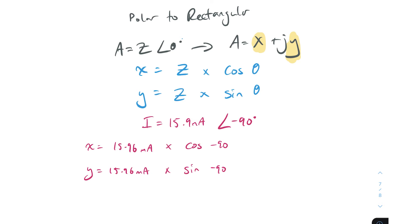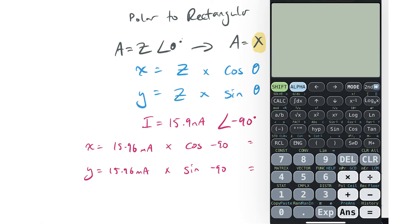If you're good with your trig you should spot something here. Let's pull up our calculator. You've got 15.96, and you don't need to convert from milliamps to amps because as long as you remember that you started off with milliamps, your final answer will be in milliamps. So 15.96 multiplied by cosine of minus 90. If you were good at trig you would know that the cosine of minus 90 is zero, so 15.96 times zero is zero. Our x component is zero, our real component is zero.